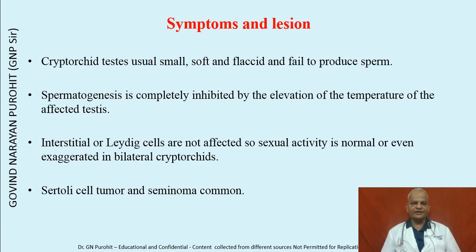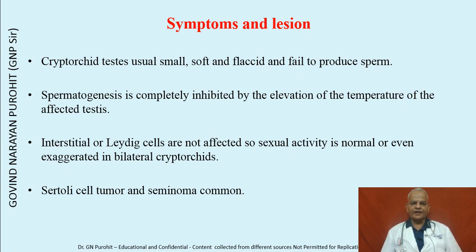Cryptorchid testes are usually small, soft, and flaccid and they fail to produce sperm. Spermatogenesis is completely inhibited because of the high temperature of the affected testes, but sexual behavior is normal because testosterone production is not affected. Sertoli cell tumor and seminoma are common in cryptorchid animals.